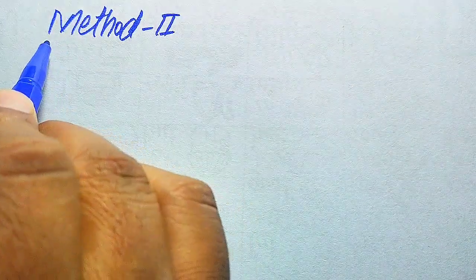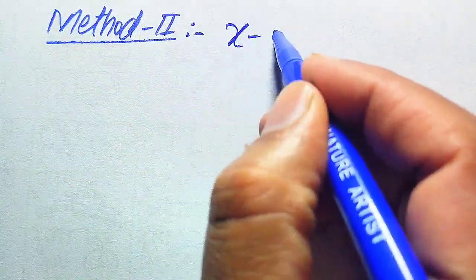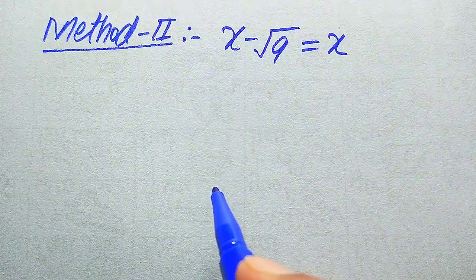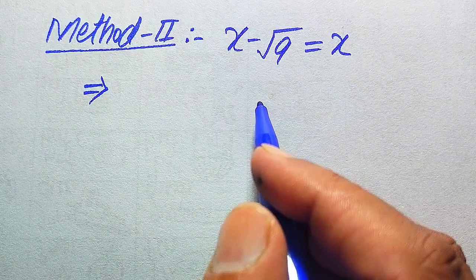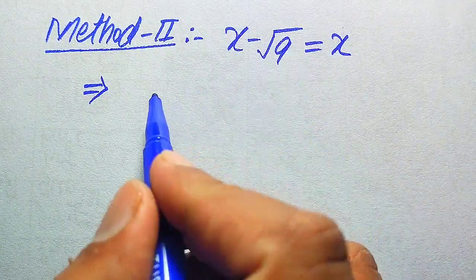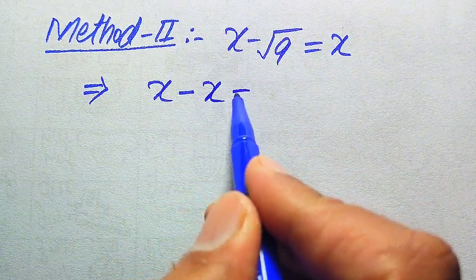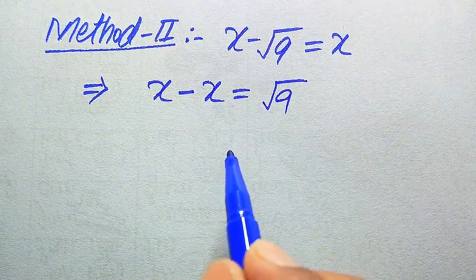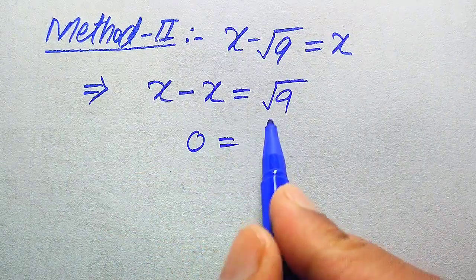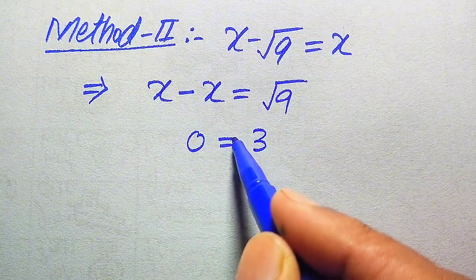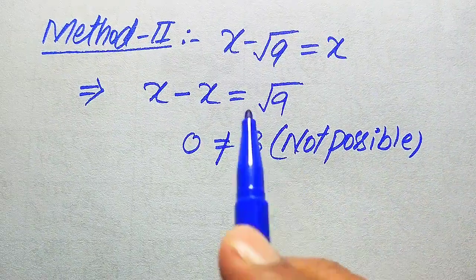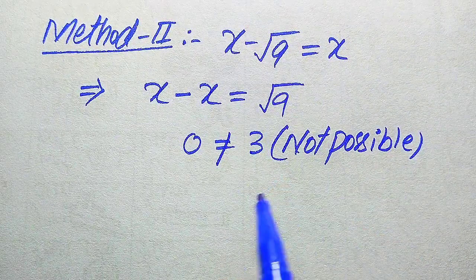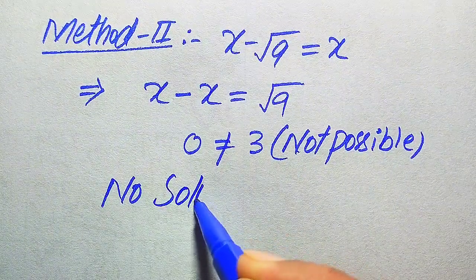Now we move to the second method, which is the direct or quickest method. The given equation is x minus square root of 9 equals x. We move x to the left hand side and square root of 9 to the right hand side: x minus x equals square root of 9. We know x minus x becomes 0 and square root of 9 becomes 3, so 0 equals 3. This is not possible, so the equation has no solution.